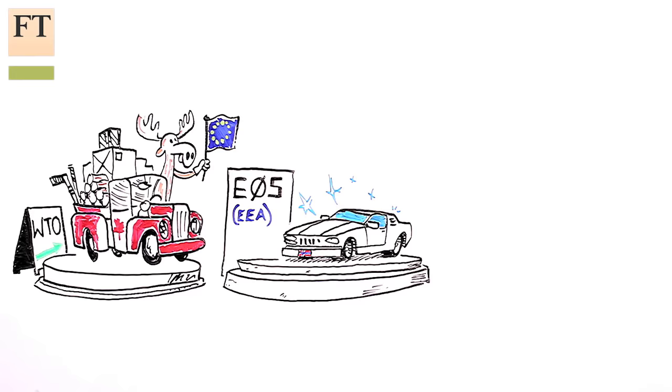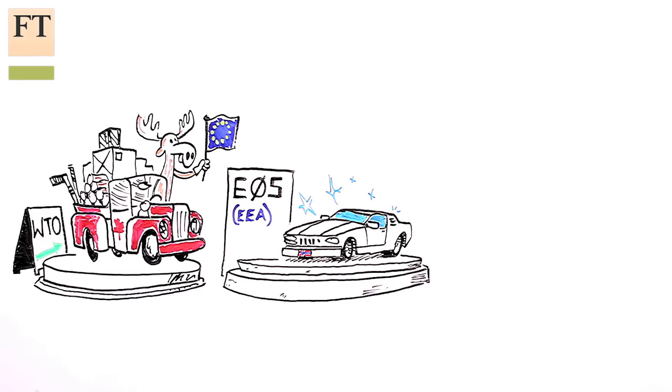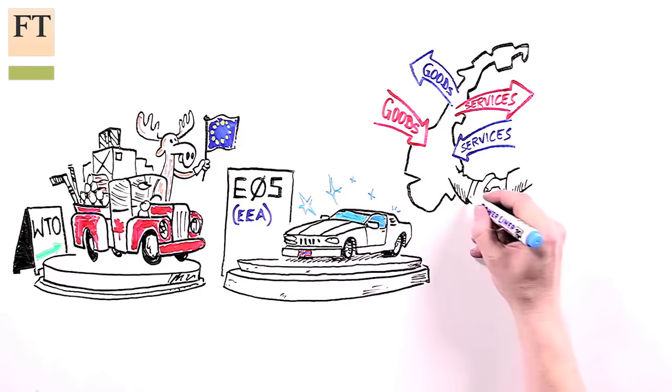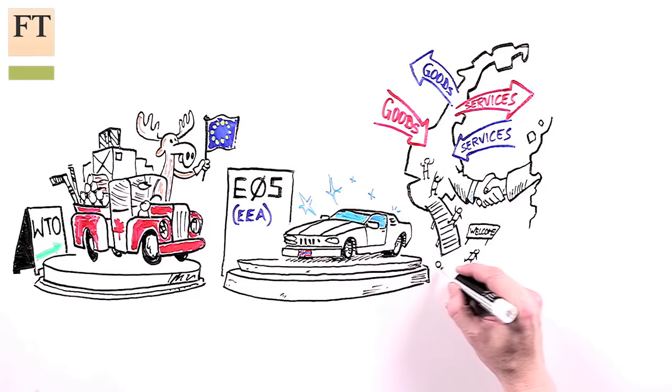Oh yes, you have. That's Norwegian for the European Economic Area or EEA, which everyone calls the Norway model. There's a lot to like about the Norway model. The EEA agreement lets Norway trade most goods and services freely inside the single market without being part of the EU. It can even strike its own trade deals with other countries.